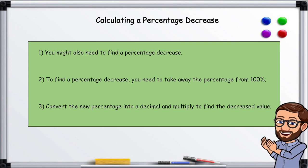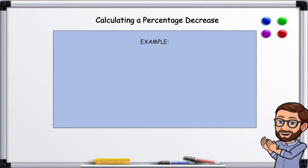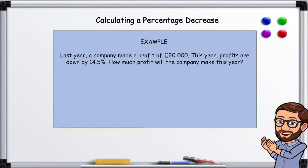Now I will show you an example. Example: Last year a company made a profit of £20,000. This year profits are down by 14.5%. How much profit will the company make this year?